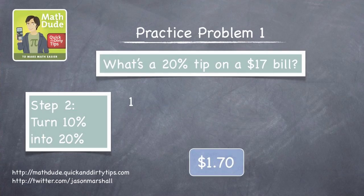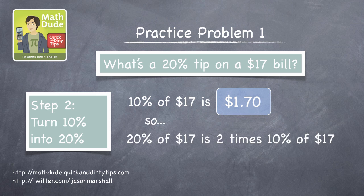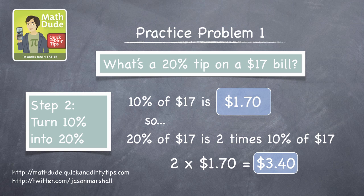Now that we know 10%, all we have to do is double that amount to find out what 20% is. 2 times $1.70 is $3.40, so a 20% tip is $3.40.